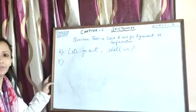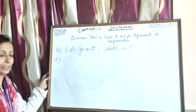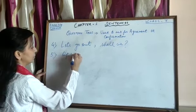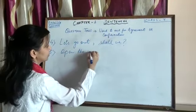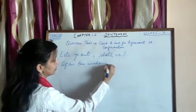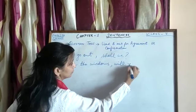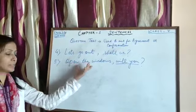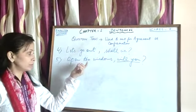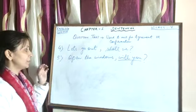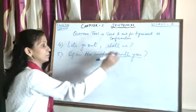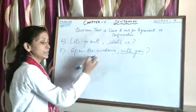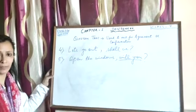Let us see the fifth rule. Imperative sentences are there at times where we can add question tags. For example: 'Open the windows — will you?' This kind of tag is always used in imperative statements. Because we know there is no subject in this kind of statement — it is considered to be 'you,' since the sentence is said to you. So we always use 'will you' in any imperative sentence.